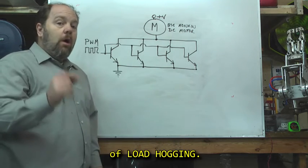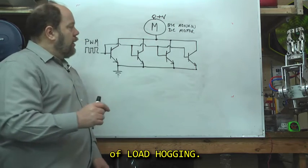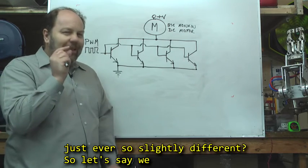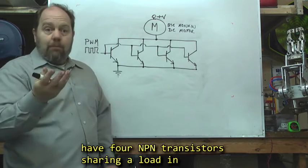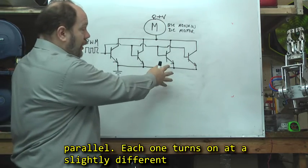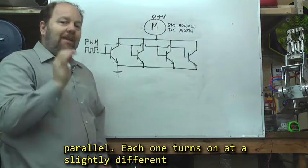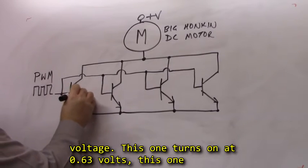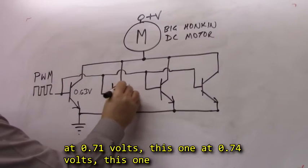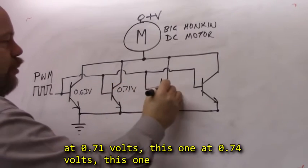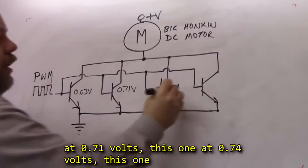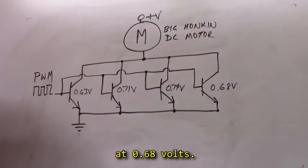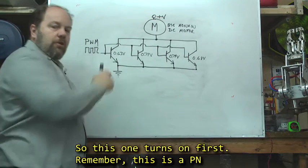You remember that I mentioned that every single transistor is just ever so slightly different? So let's say we have 4 NPN transistors sharing a load in parallel, each one turns on at a slightly different voltage. This one turns on at 0.63V, this one turns on at 0.71V, this one at 0.74V, and this one at 0.68V.